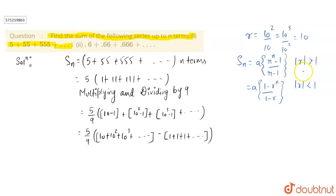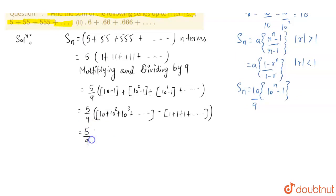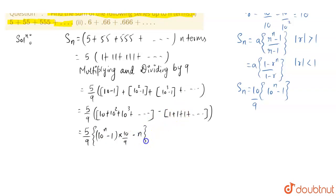Here we can see mod of R is greater than 1, so we will use this formula. The first term A is 10, so we get 10 into 10 to the power N minus 1, and R is also 10, so 10 minus 1 is 9. This gives 10 by 9 into 10 to the power N minus 1. So the expression becomes 5 by 9 into 10 to the power N minus 1, into 10 by 9, minus N. So this is the final answer.